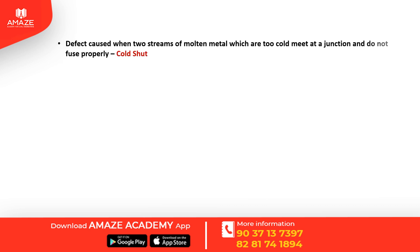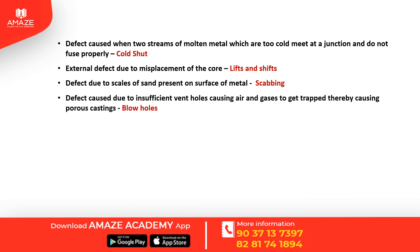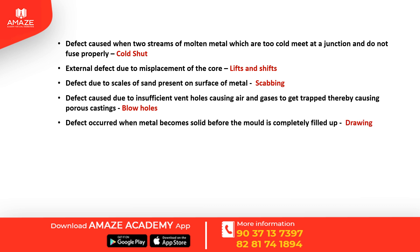Defects in cast iron castings include: cold shut, where two streams of molten metal meet at a junction and do not fuse properly; lift and shift, an external defect due to misplacement of the core; scabbing, caused by scale of sand present on the surface of the metal; and blow holes, caused by insufficient vent holes trapping air and gases in porous castings. Misrun occurs when metal becomes solid before the mold is completely filled.